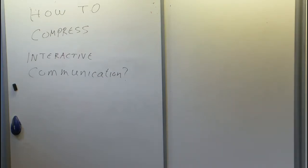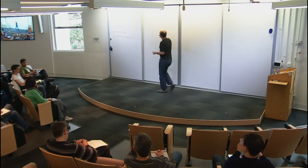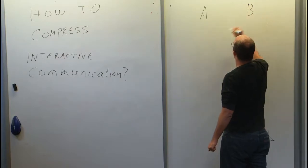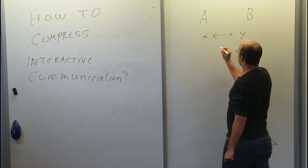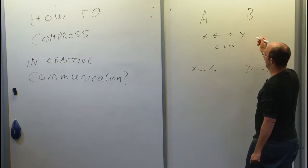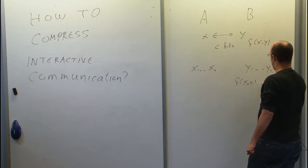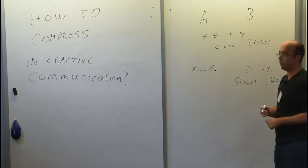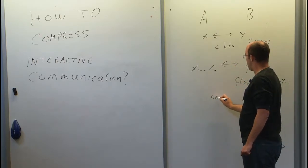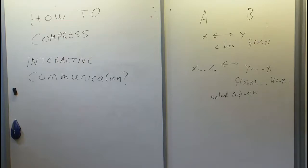In many cases we argue the intuition should be true. In particular, in communication: if Alice and Bob share one input (X, Y) and communicate using C bits, now if they have X_1,...,X_n and Y_1,...,Y_n with no shared information between instances, the natural conjecture is that they need roughly C times n bits. That's interesting to try to prove.